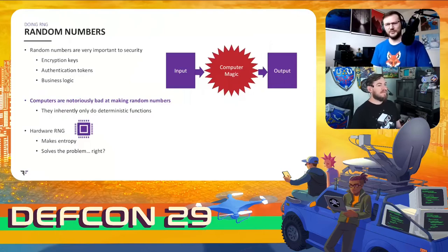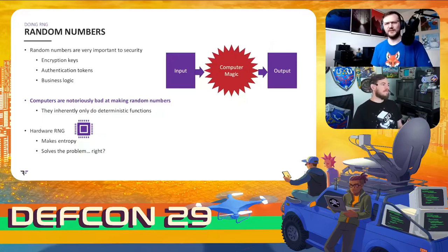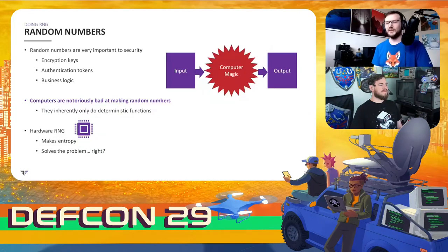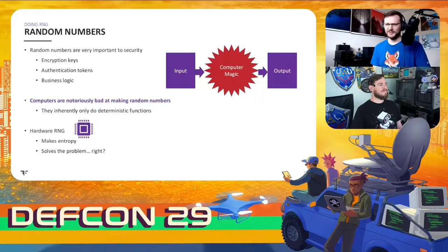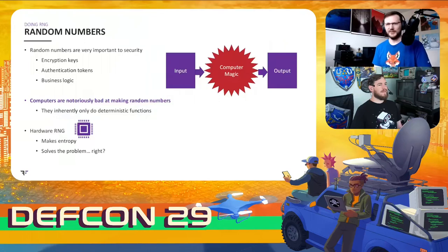Numbers, of course, are kind of how computers work. So a random number can be a stand-in for all sorts of things that we don't normally think of as numerical - encryption keys, authentication tokens, and our lovely friend business logic. One of the things you're going to notice throughout this presentation is that the vulnerabilities we're going to describe here have a lot to do with the specific logic of a particular application, and aren't necessarily the kind of canned exploit that you might expect from a widespread CVE.